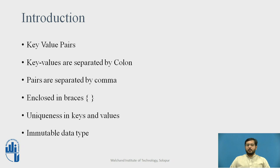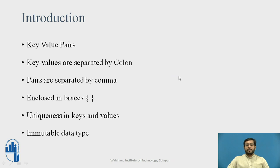Now, what is dictionary? Dictionary is made up of key and value pairs where the key and value are separated by a colon, and the pairs are separated by commas. The key value pairs in all are enclosed in braces. In a dictionary, the keys should be unique where the values cannot be duplicated. This dictionary or this data type is an immutable data type.